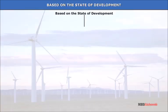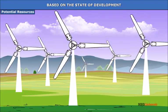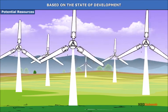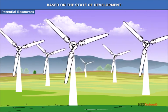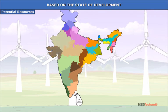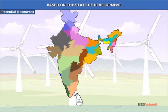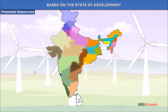Based on the state of development, resources are of four types: potential, developed resources, stock and reserve. Potential resources are found in a certain region but may not have been utilized. For example, Rajasthan and Gujarat have enormous potential for the development of wind and solar energy but these have not been fully exploited so far.